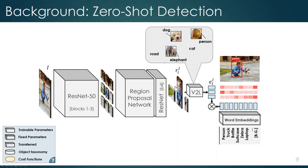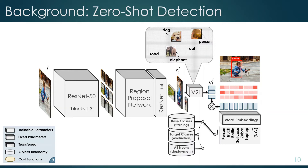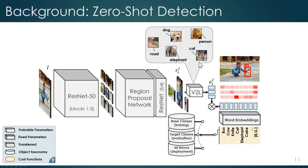Basically all we need to do is train a linear layer that maps visual features to the embedding space, which we call the V2L layer. In zero-shot learning, we train this network on base classes that we have annotations for, and at test time replace the classifier weights with the embeddings of the target classes. Zero-shot learning assumes the V2L layer will work for unseen classes even though we haven't seen any examples during training, but there's no evidence for that assumption, and in fact performance on target classes is usually much worse than on base classes.